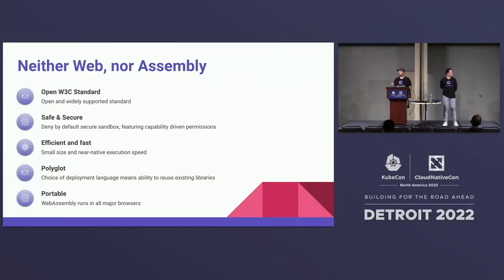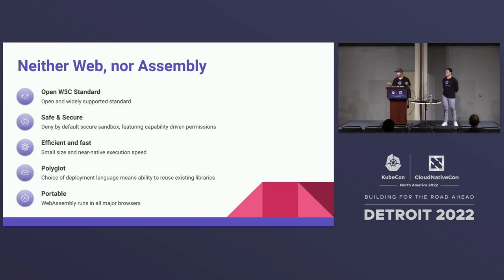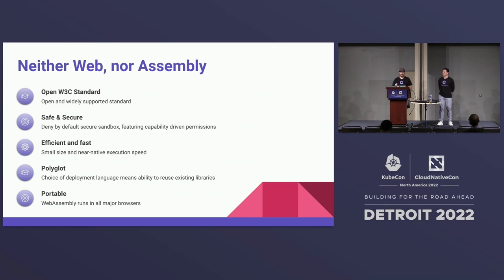We have this saying: WebAssembly is neither web nor assembly, which is kind of funny given its name. The big thing is that it's an open W3C standard, and it first became popular for the web when it came out. Because it became popular on the web, it has some things that the web desires — namely that it's safe and secure, efficient and fast. It's a polyglot thing; you can write it in any language, and it's portable — you can run it in all major browsers. Now, all of those things are also very good benefits for the server side. You want it to be safe and secure, and you want it to be very efficient and fast. You also want to be able to write it in any language, and you want it to run on any operating system, not just Linux, not just a specific processor, but every single operating system. This is a very important selling point for WebAssembly and everything we build on with it.